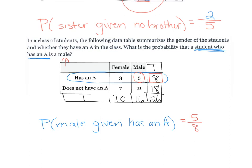So we have these different types of probabilities: basic probability, AND probability where two things are both true, OR probability where one thing or the other is true, and conditional probability where we don't look at the total but focus on a certain row or column in the table.